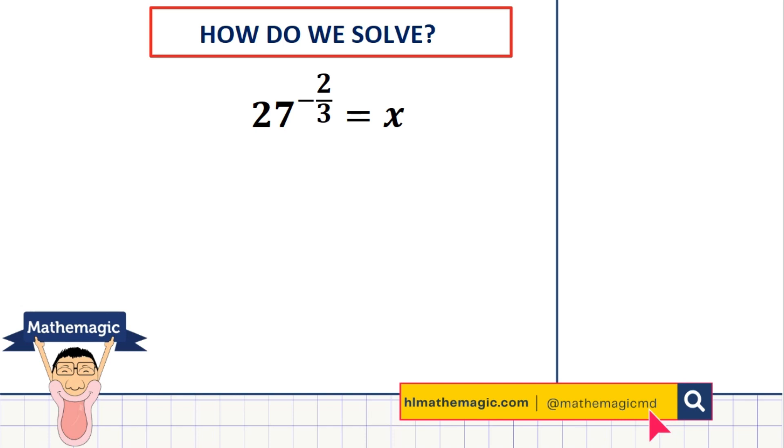Welcome to the Mathemagic channel. Today we look at 27 to the power minus 2 over 3 equal to x. How do we solve this? Well, we could pull our hairs out or we could use some simple mathematical rules. Let's get right into it.